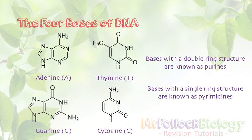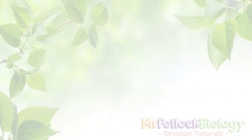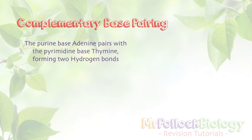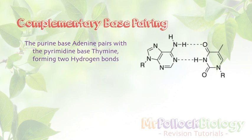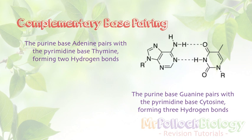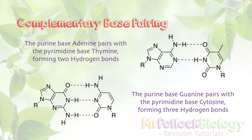Purines always bond with pyrimidines. Adenine always bonds with thymine, and guanine always bonds with cytosine. There's never any adenine-cytosine or thymine-guanine pairing. It's always the purine adenine pairing with the pyrimidine thymine, and you get two hydrogen bonds formed there — so A and T gives two hydrogen bonds. The other option is the purine guanine pairing with the pyrimidine cytosine, giving three hydrogen bonds — so G and C gives three. These hydrogen bonds hold together the two opposite strands of the DNA molecule. Individual hydrogen bonds are weak, but because there are so many of them, their combined strength holds the two strands in place.